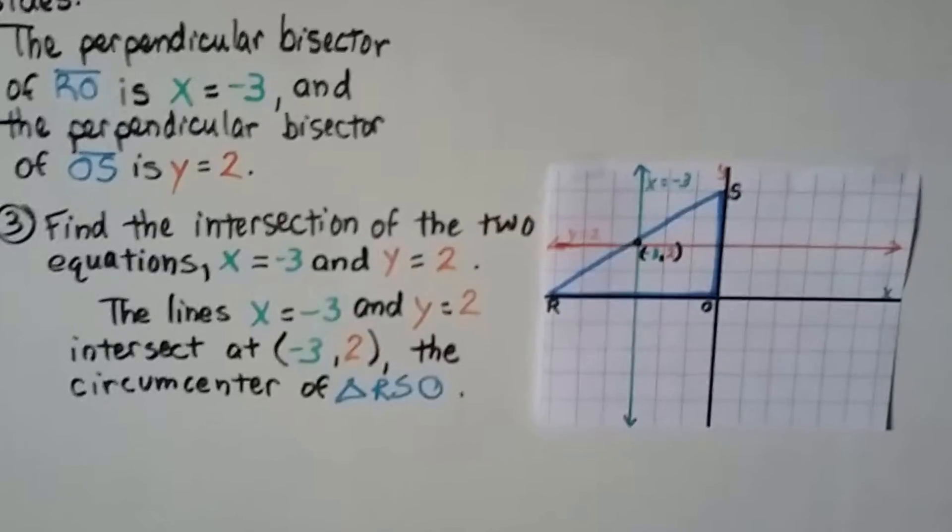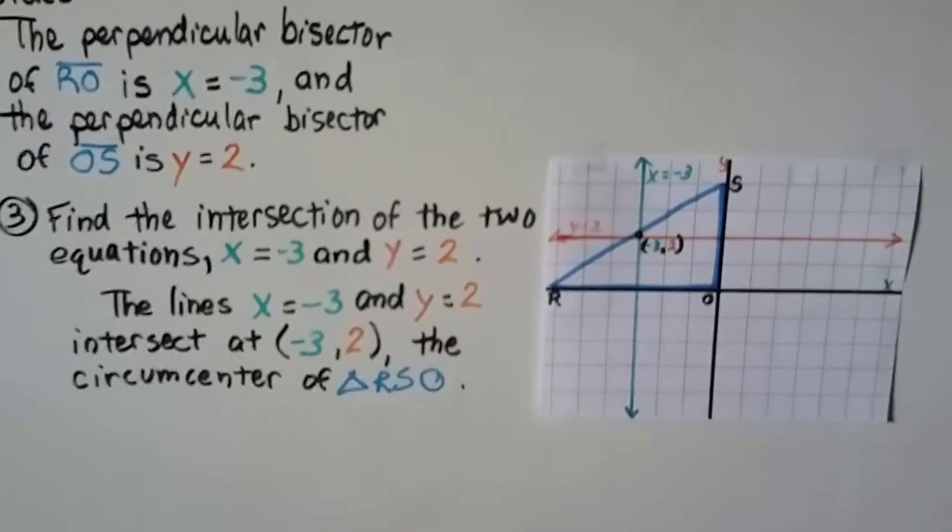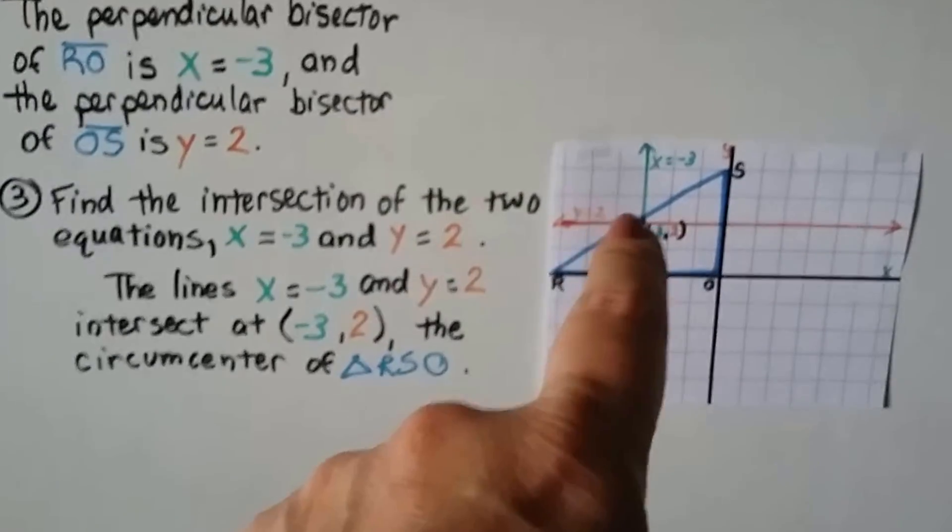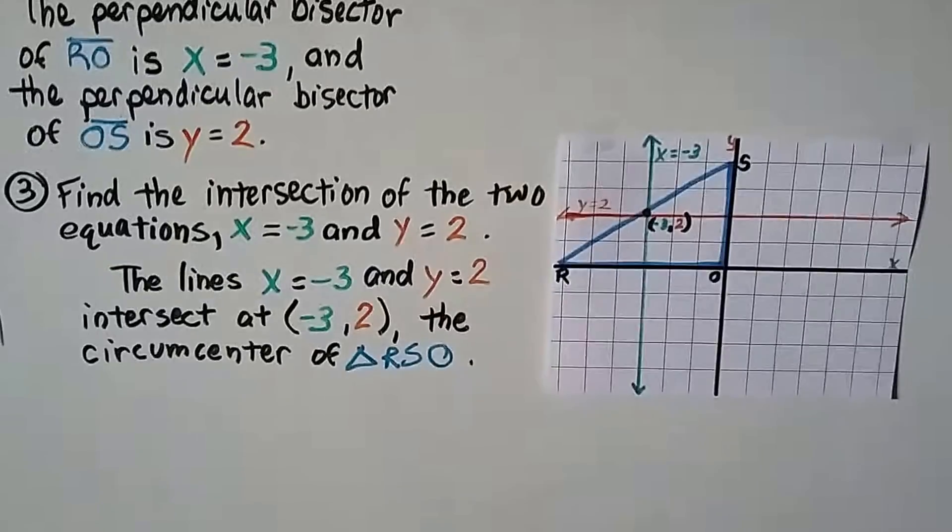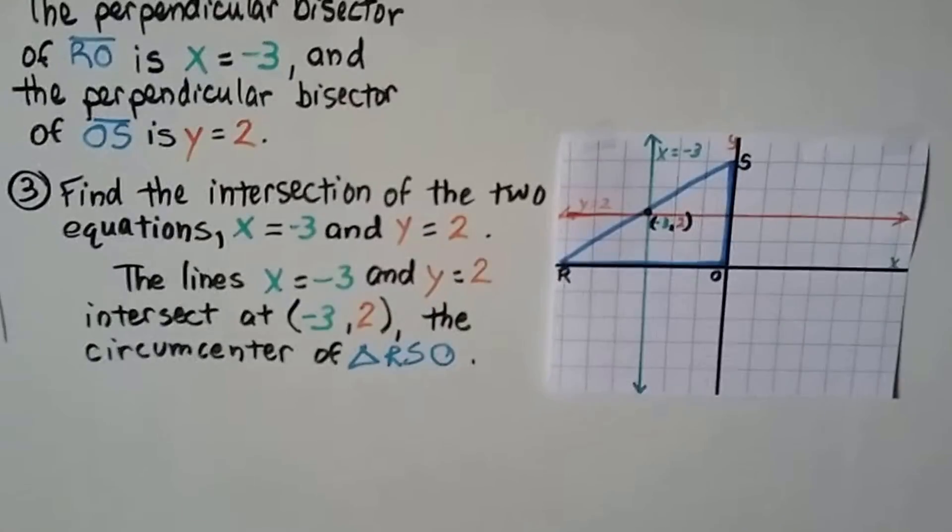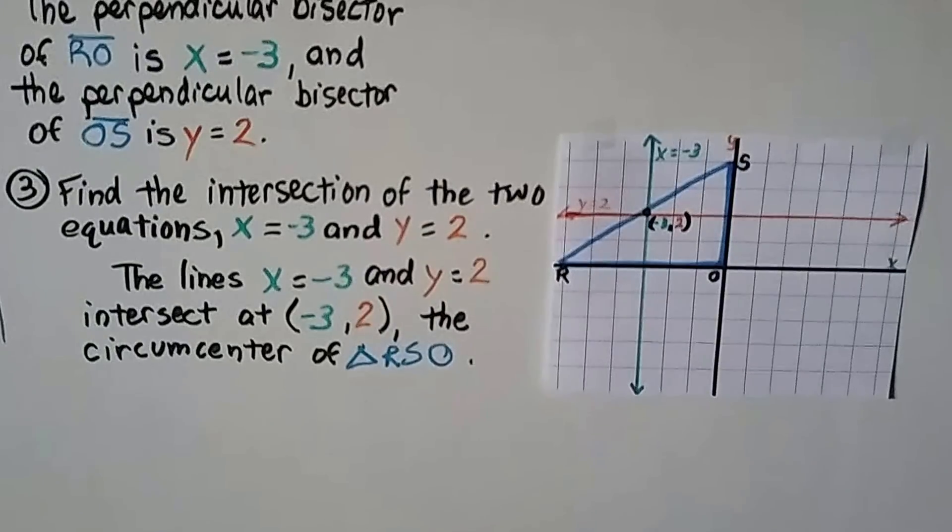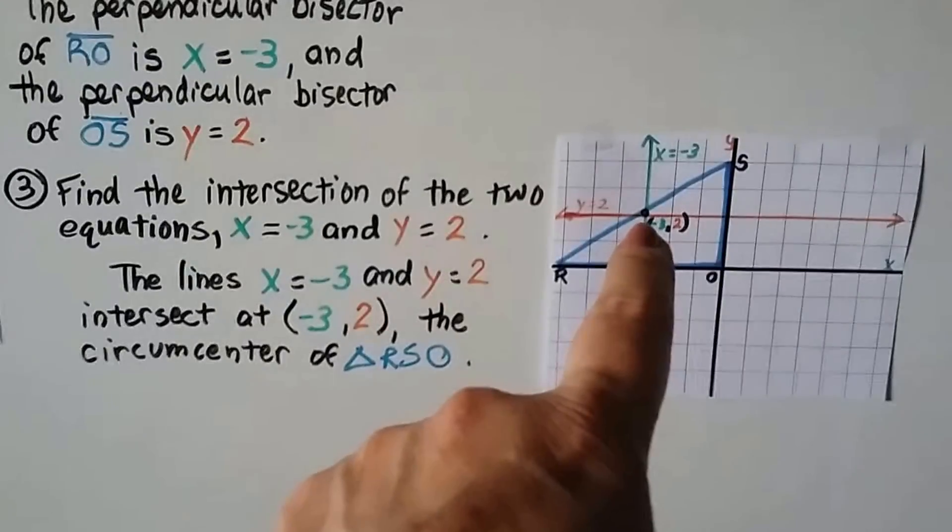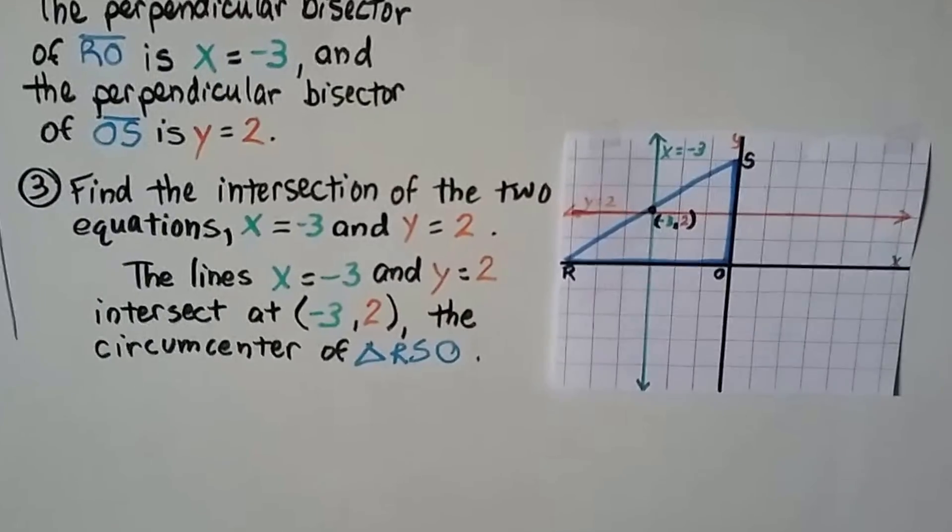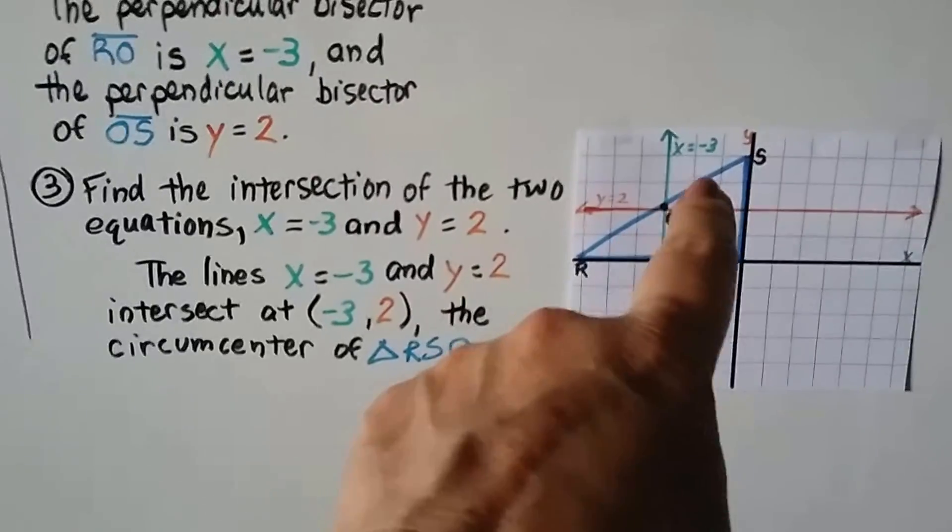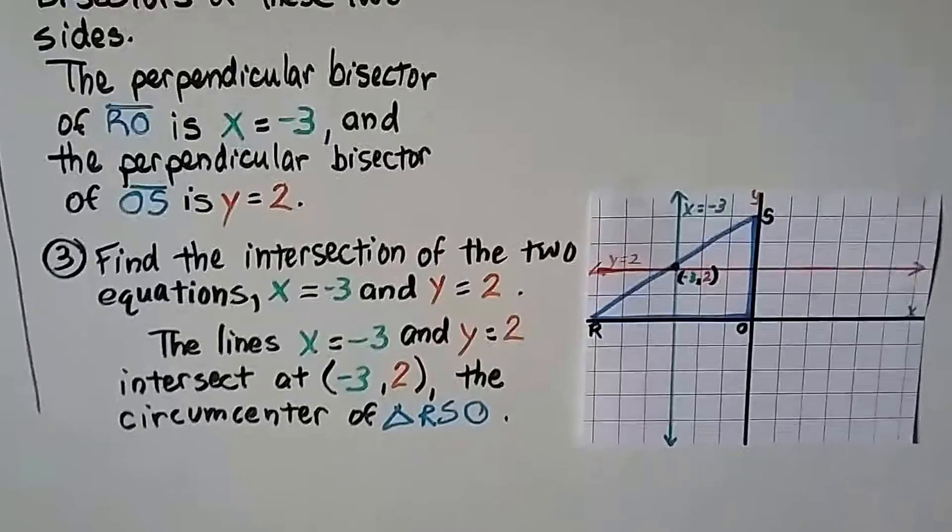Now, number 3, we find the intersection of the two equations, x equals negative 3 and y equals 2. The lines x equals negative 3 and y equals 2 intersect at negative 3, 2, the circumcenter of triangle RSO. And it's a right triangle, so see how it's on the hypotenuse?